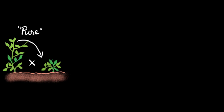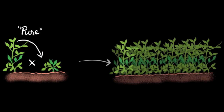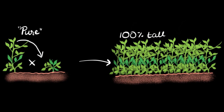But to Mendel's surprise — and to even my surprise when I learned this — we get all tall plants. That's right, big shock: 100% of them end up being tall. This raises many questions. What happens to the short one? Does it have no effect at all? Why aren't we getting any medium-sized plants? Why aren't we getting any short plants? What is going on?